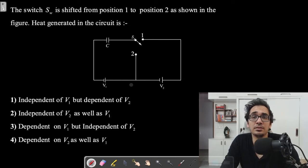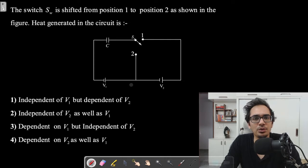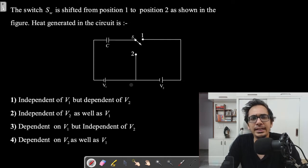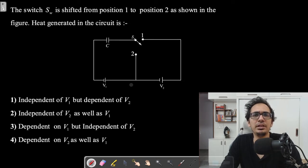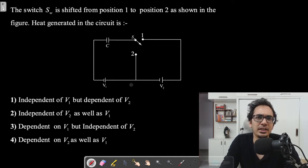In this question, even the good students — the top ranking students — make mistakes, so listen carefully. A switch SW is shifted from position one to position two as shown in the figure. The question asks for the heat generated in the circuit. This is a standard problem but many students make mistakes. Options include: independent of V1, V2; dependent on V1, V2; and similar choices.